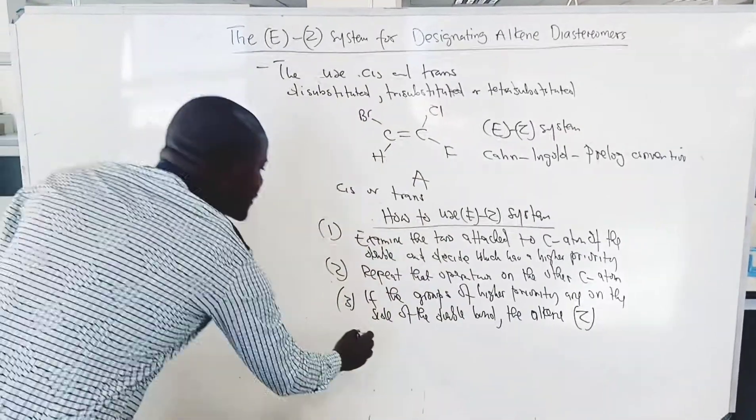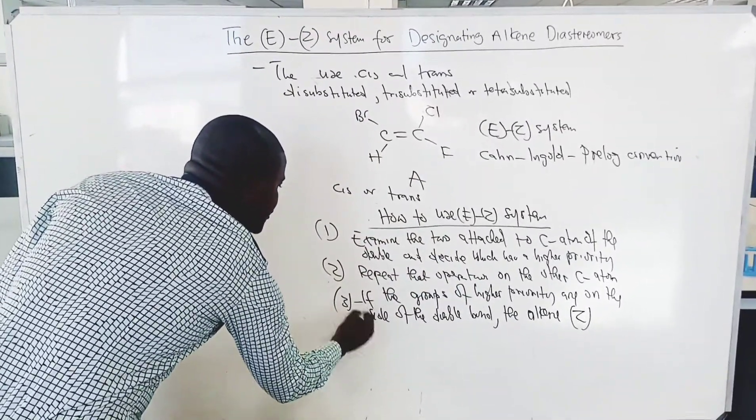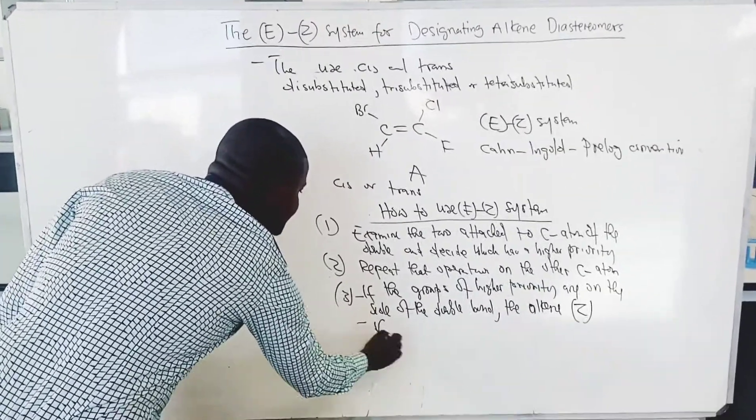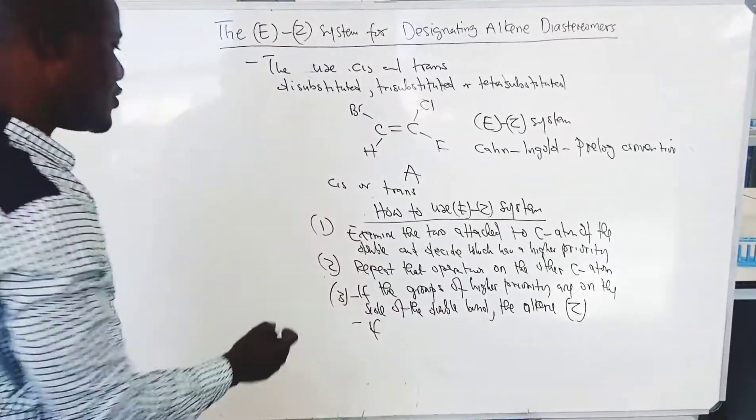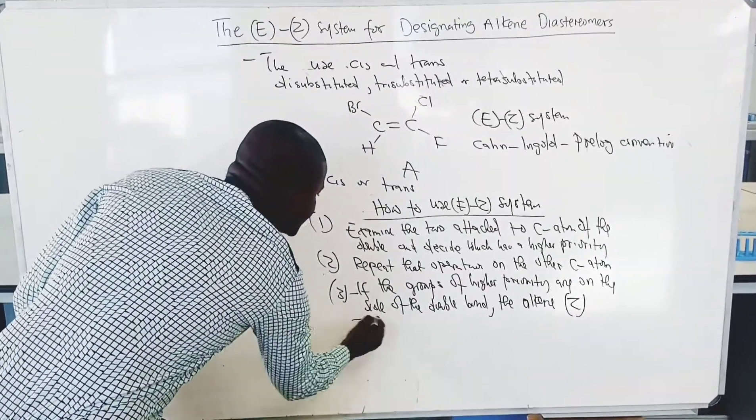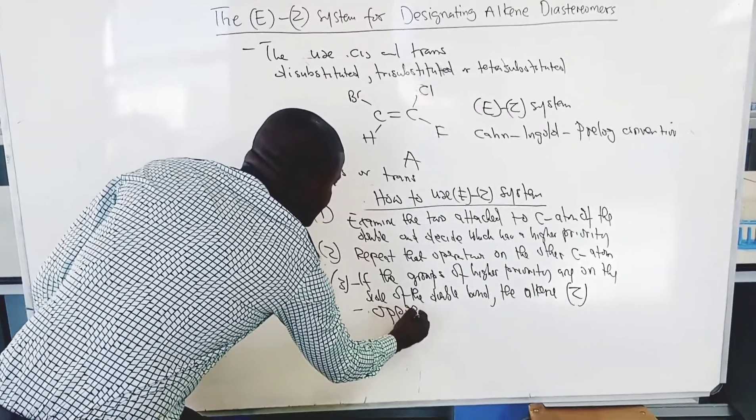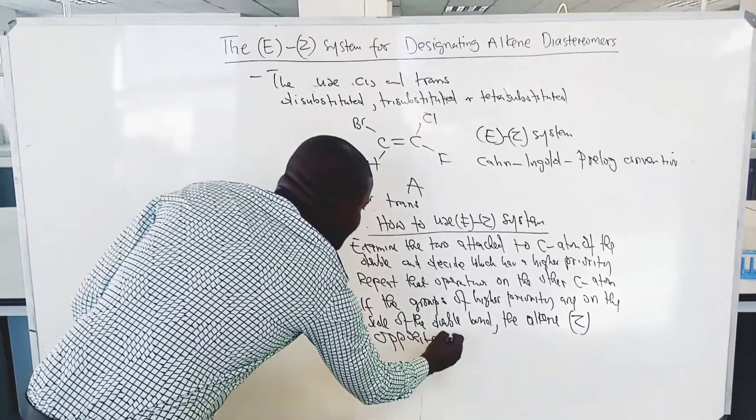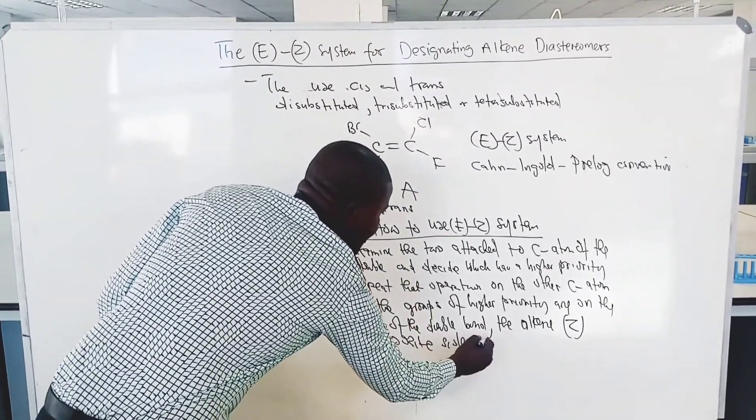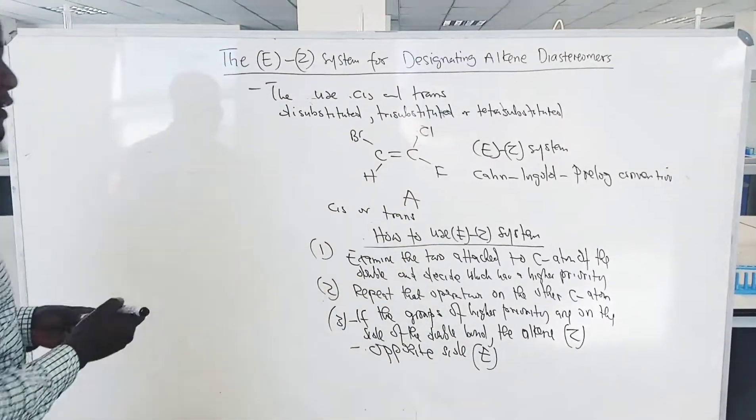If the groups of higher priority are on the opposite side of the double bond, the alkene is designated E.